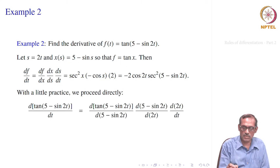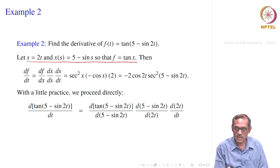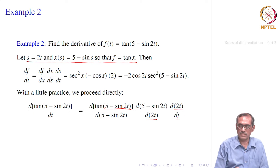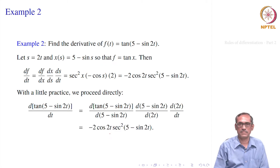Now there is a shortcut — we do not always have to write s equal to 2t, x equal to this, and f equal to tan x. We can proceed directly: d of tan(5 minus sin 2t) by dt equals d of tan(5 minus sin 2t) by d of (5 minus sin 2t), multiplied by d of (5 minus sin 2t) with respect to 2t, multiplied by d of 2t with respect to t. Directly we can write it and proceed to get the answer.